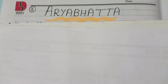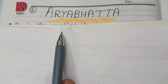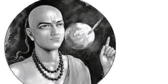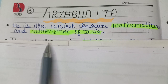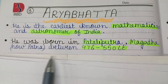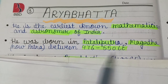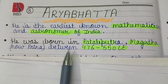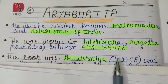The third scientist is Aryabhata, the earliest known mathematician and astronomer of India. He was born in Pataliputra, Magadha, now known as Patna, between 476 to 550 CE.